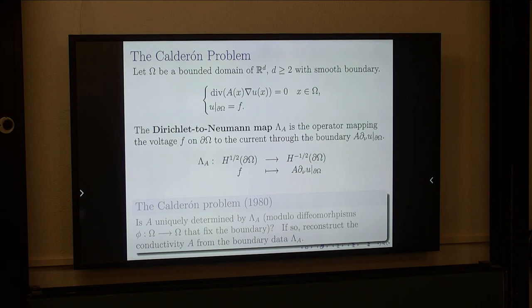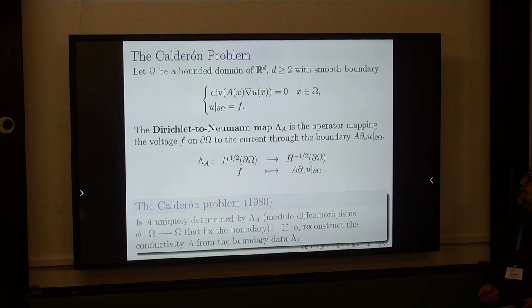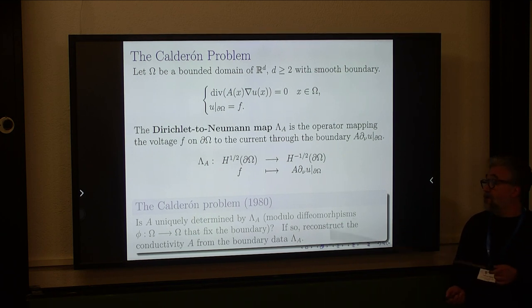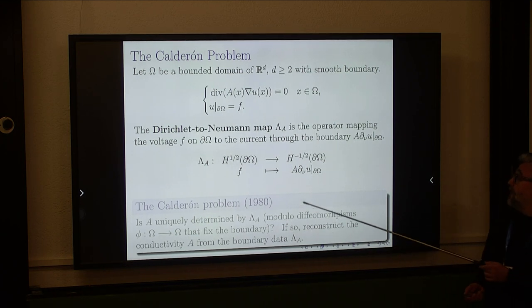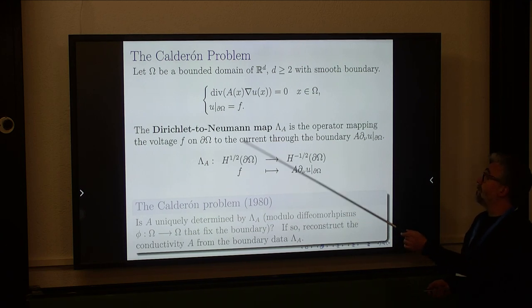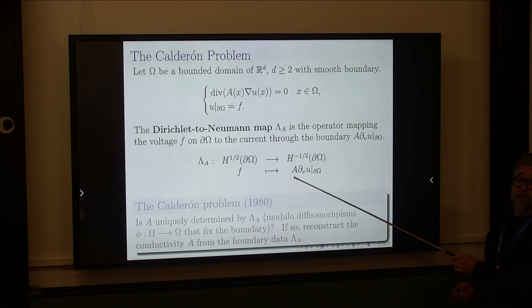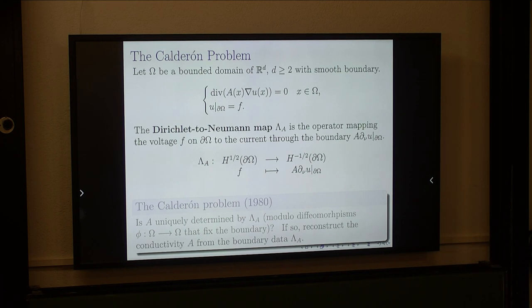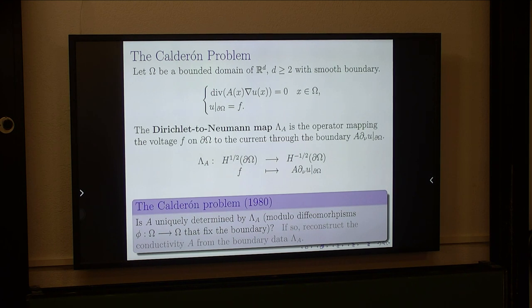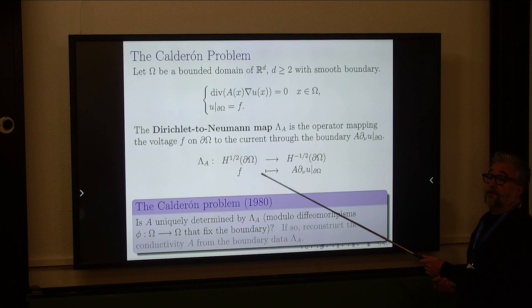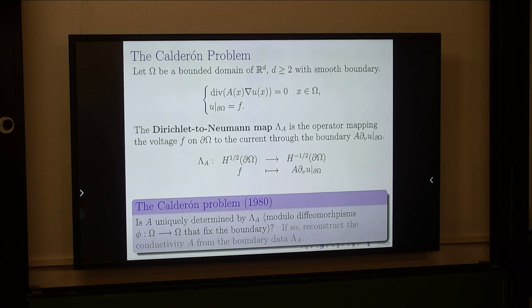The main object is the Dirichlet-to-Neumann map, which is a linear map from smooth functions on the boundary to smooth functions on the boundary. You take Dirichlet condition F, you solve the PDE, and then you compute the normal derivative at the boundary. The Calderón problem is essentially: can the knowledge of this operator determine in a unique way the conductivity A?